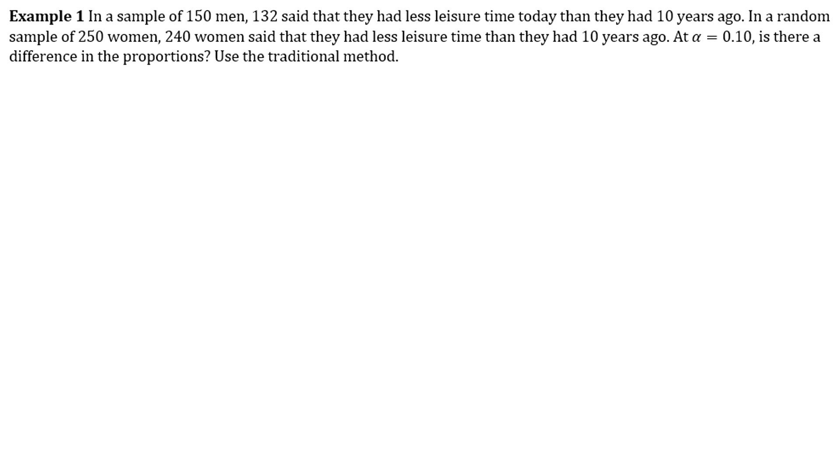Example 1 says that in a sample of 150 men, 132 said that they had less leisure time today than they had 10 years ago. In a random sample of 250 women, 240 said that they had less leisure time than they had 10 years ago. Alpha is 0.1. Is there a difference in the proportions? Use the traditional method.